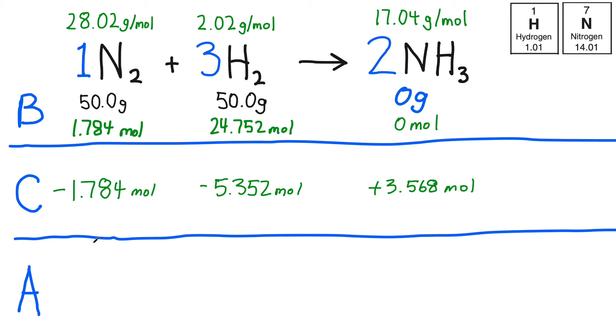So now I've figured out the action that happens when this reaction occurs. All of the N2 is going to get used up, some of the H2 is going to get used up or converted, and 3.568 moles of NH3 are going to come together as product. The A line stands for after. What's left after the reaction occurs? For N2, it's easy. Zero moles is left. The entire quantity of N2 is reacted. We call this the limiting reactant because it effectively determines how much of the other reactant will react and how much product is created.